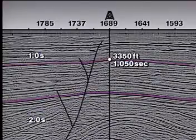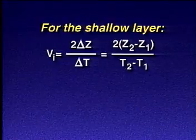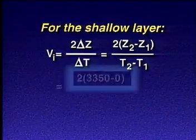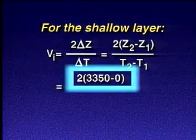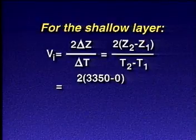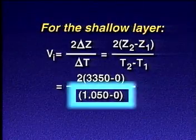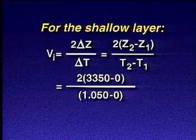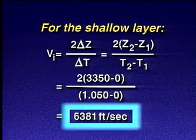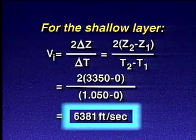Since this is the shallowest layer, the interval velocity of the shallow layer equals 2 times 3,350 feet, divided by 1.050 seconds, or 6,381 feet per second.